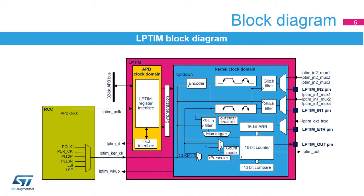The low-power timer features an encoder mode function that can be used to interface with incremental quadrature encoder sensors using the peripheral's LP-TIM-IN1 MUX and LP-TIM-IN2 MUX inputs. Both inputs feature glitch-filtering circuitry.